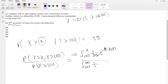Likewise, the denominator will be 1 over 300 e to the negative x over 300 dx. And this is equal to 0.95.